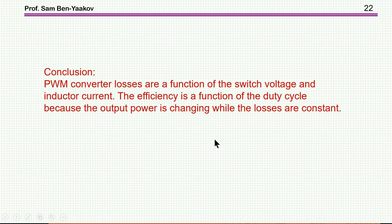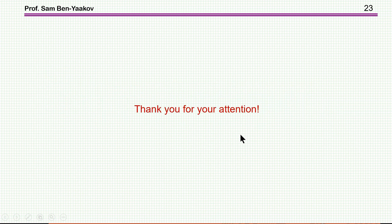In conclusion: PWM converter losses are a function of the switch voltages and the inductor current. The efficiency, however, is a function of the duty cycle, because the output power changes while the losses remain constant — assuming constant voltage and constant inductor current. Thank you very much for your attention; I hope you find it of interest and perhaps useful to you in the future.